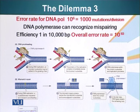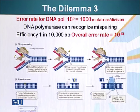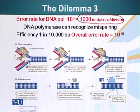The other dilemma is the fidelity or accuracy of DNA polymerase. DNA polymerase 1 makes mistakes — for every million bases it puts in, it makes one mistake. In our cells, if we calculate, every time a cell divides, DNA polymerase will basically make 1000 mistakes.